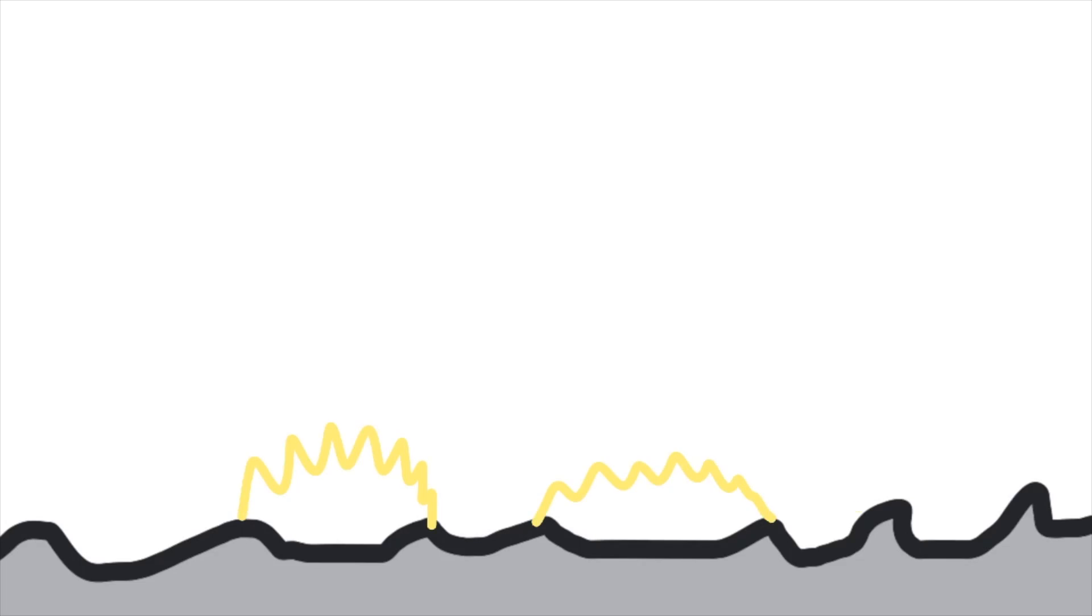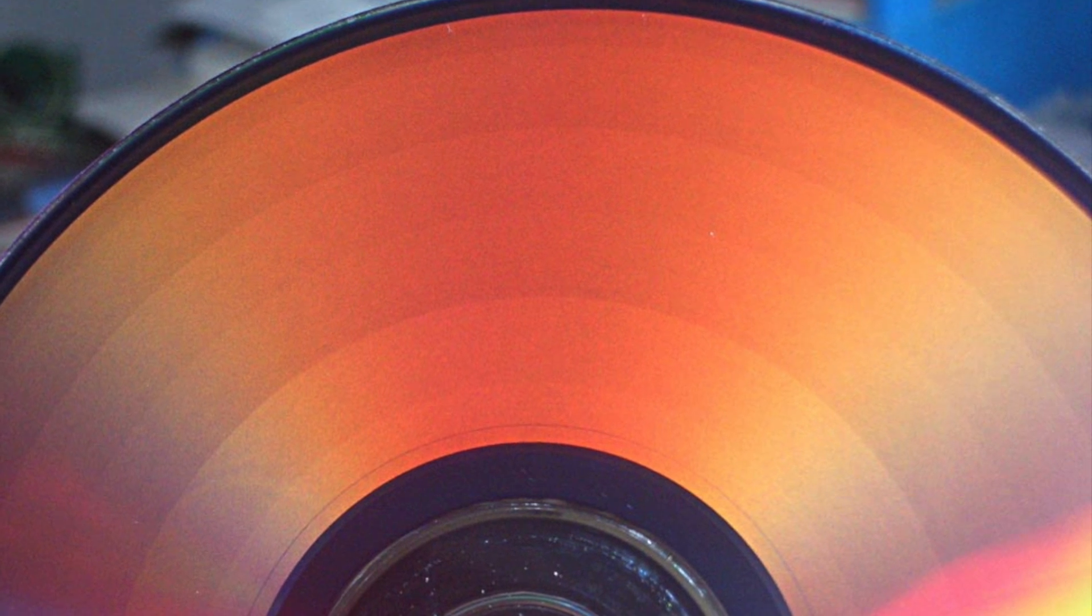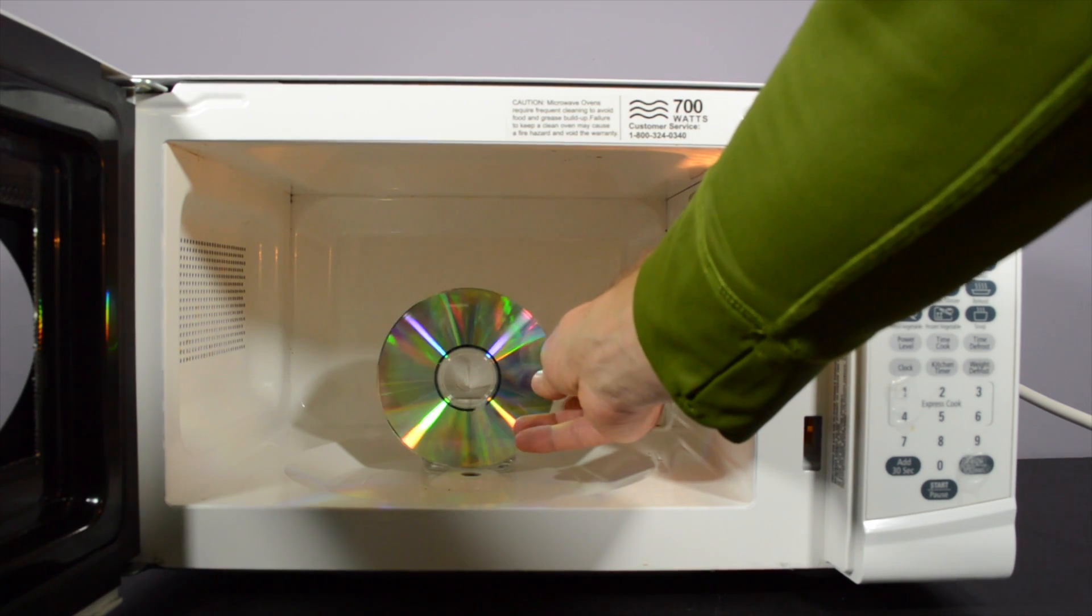The unevenness of the aluminum layer will interact with the microwave radiation and cause that buildup of charge to eventually discharge and create a pathway through those bumps and rings. So let's see what happens.